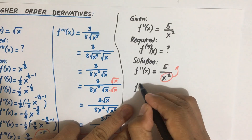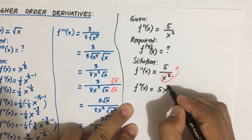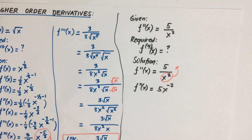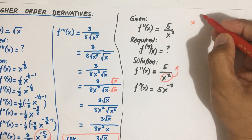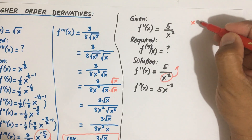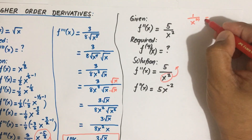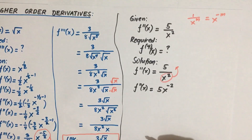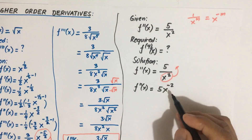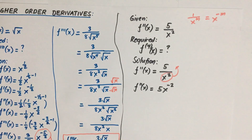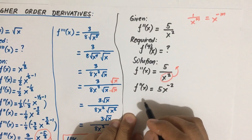Our first move here is to rewrite this. We are given F double prime of x equal to five over x squared, and we can move this up. So we have F double prime of x equal to five x to the negative two. The rule is: if you have one over x to the power m, this is equivalent to x to the power minus m. So we apply this concept here, and the exponent becomes negative two.